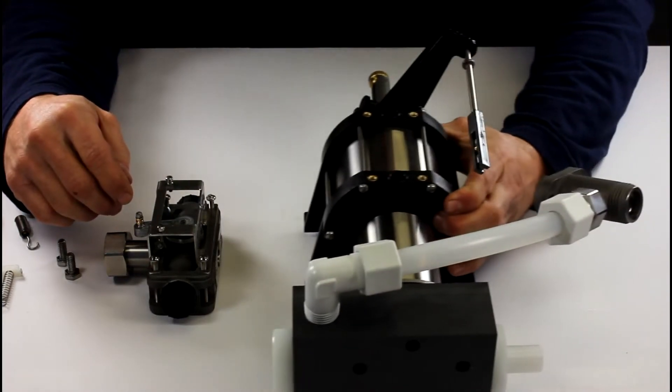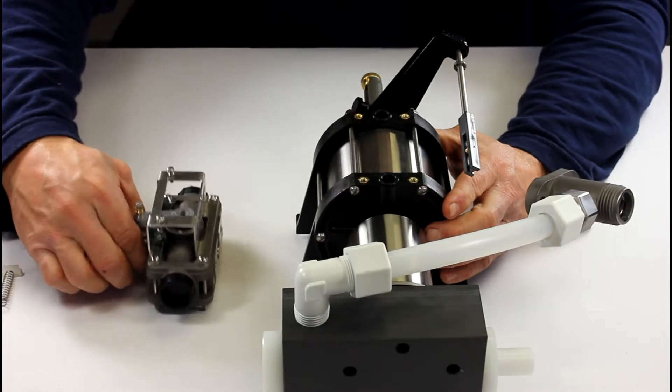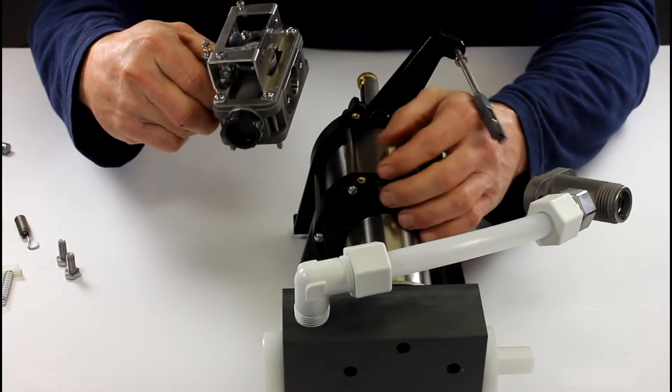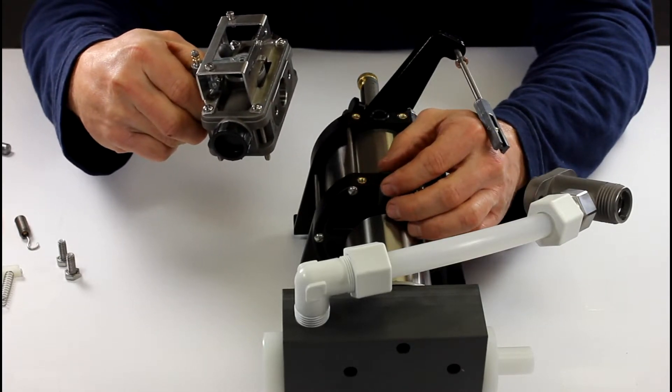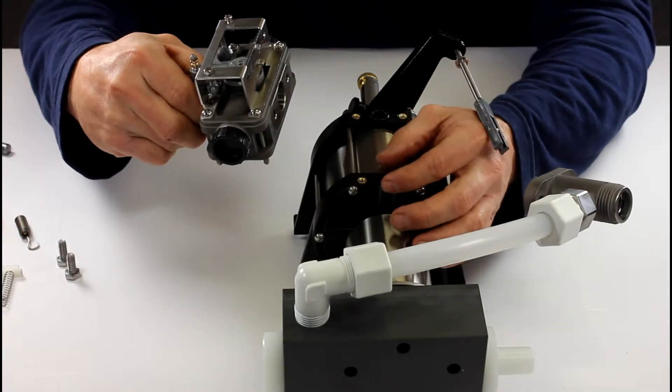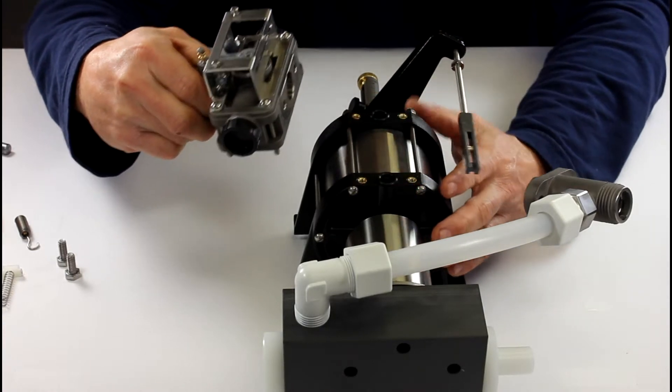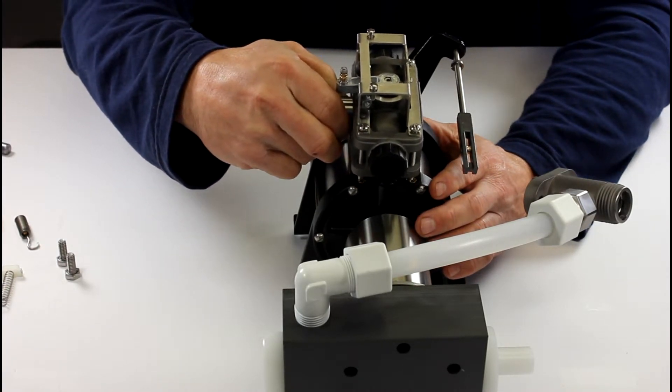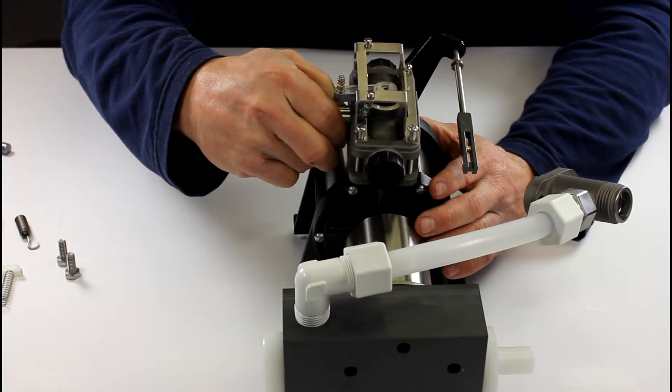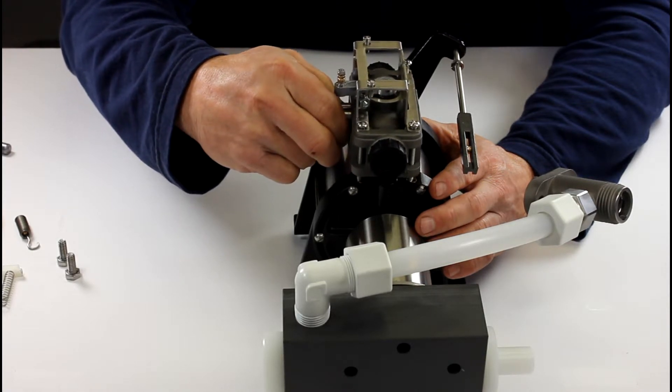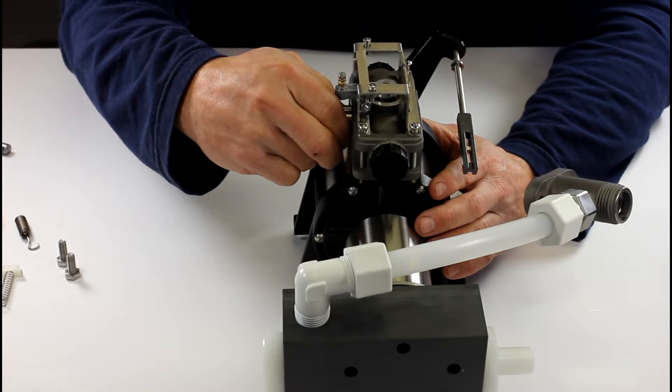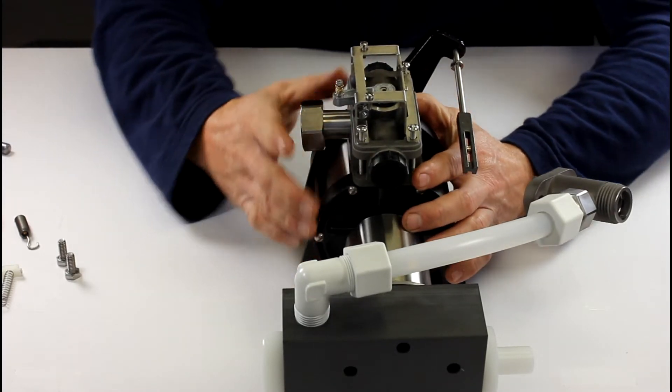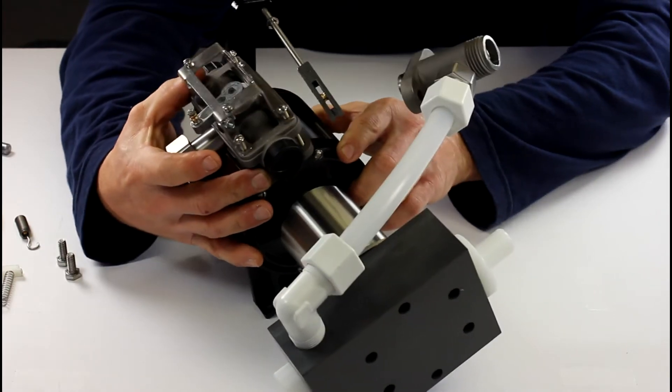So now I am going to reassemble my valve block onto my water motor. I'm going to check these o-rings, make sure they're in my counterbore there. Those screws will line up with those brass inserts. Nice and easy.